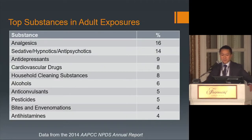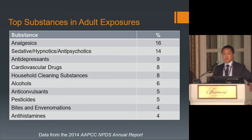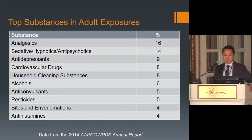Almost 2,500 exposures were treated with hemodialysis and about 43 with hemoperfusion. Topping the list of responsible toxins are analgesics, followed by sedatives, hypnotics, and antipsychotics, with antidepressants in third place. Household cleaning substances, alcohols, and pesticides are also significant contributors.